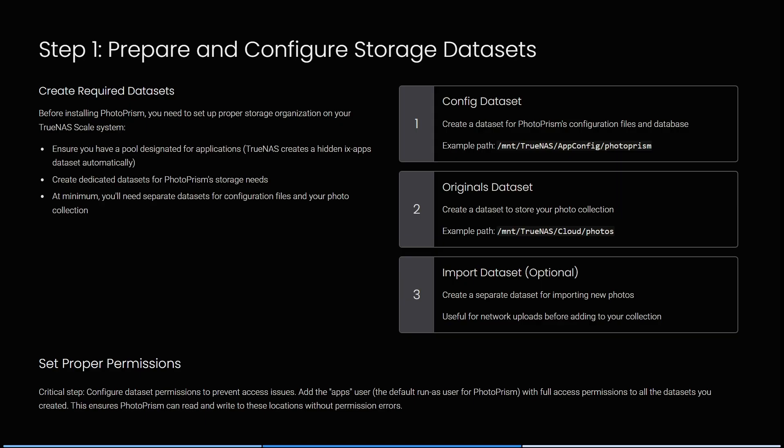On the right-hand side you'll see over here, you need to create datasets for PhotoPRISM's configuration files and datasets. Here's an example path. You also need to create datasets to store your photo collection, and then create separate datasets for importing new photos. This is useful for network uploads before adding to your collection.